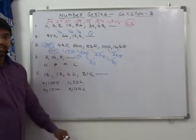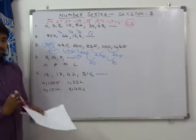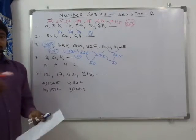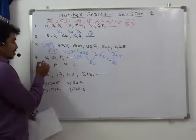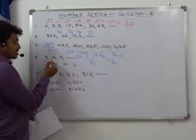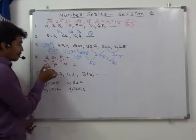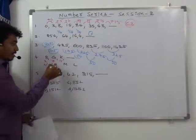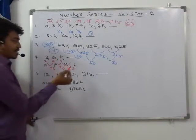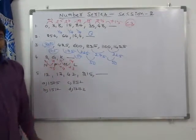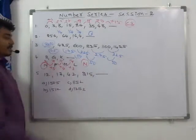Question 4 is a simple letter series. B is position 2, G is position 7, K is position 11. Differences: +5, then +4, so next is +3, giving position 14. The 14th letter is N. So the answer is N.